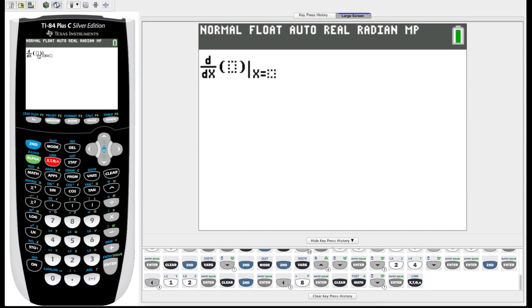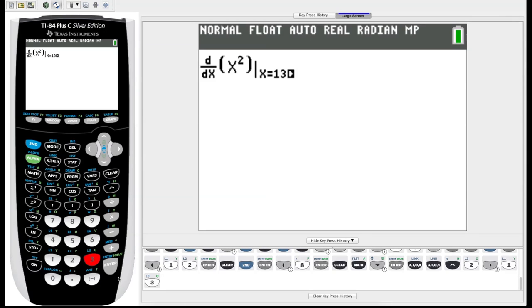It moves our cursor over. This is the function we're going to take the derivative of—let's say x squared. So x^2. And then if we arrow over to—okay, so it filled in the variable button, so now it says x equals what? Where do we want to evaluate the derivative at? Let's say x equals 13. And now if we hit enter, it will take the derivative of x squared and evaluate it at x equals 13.